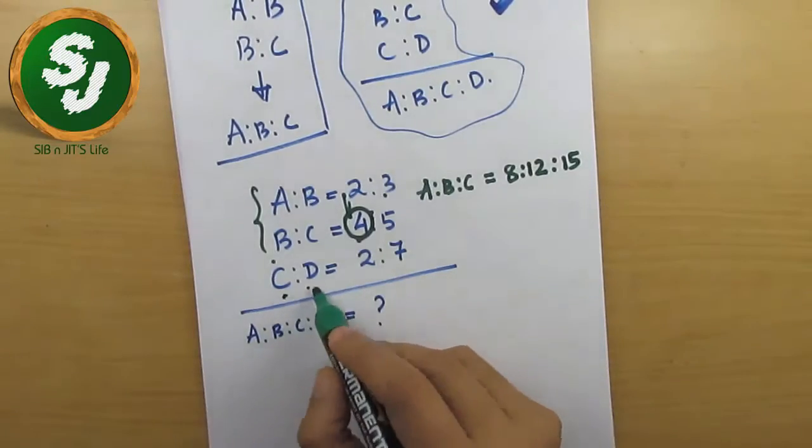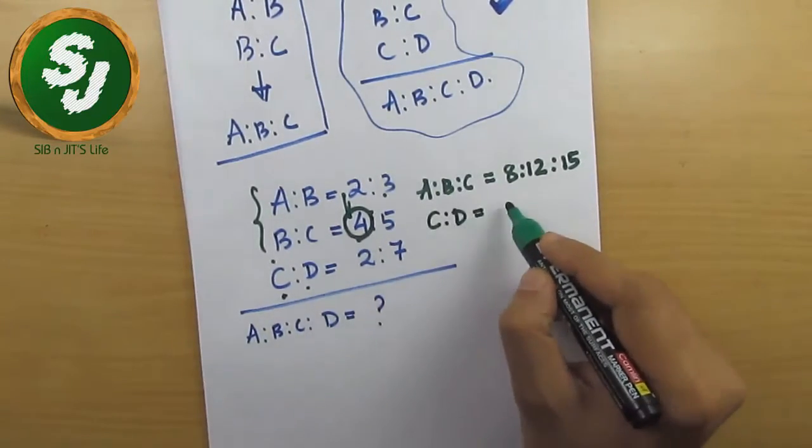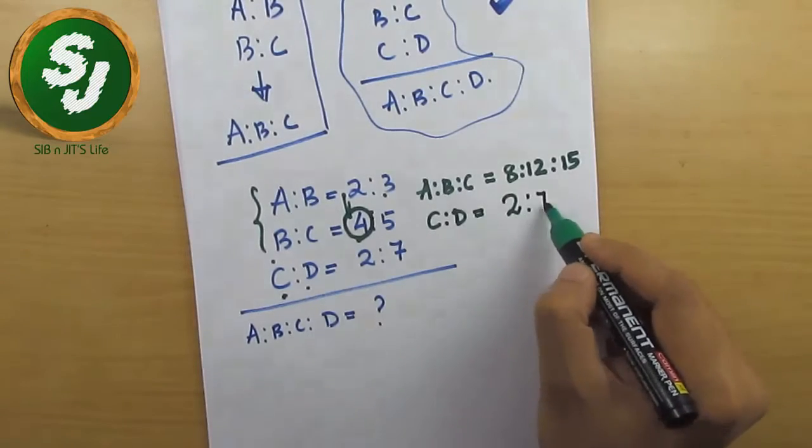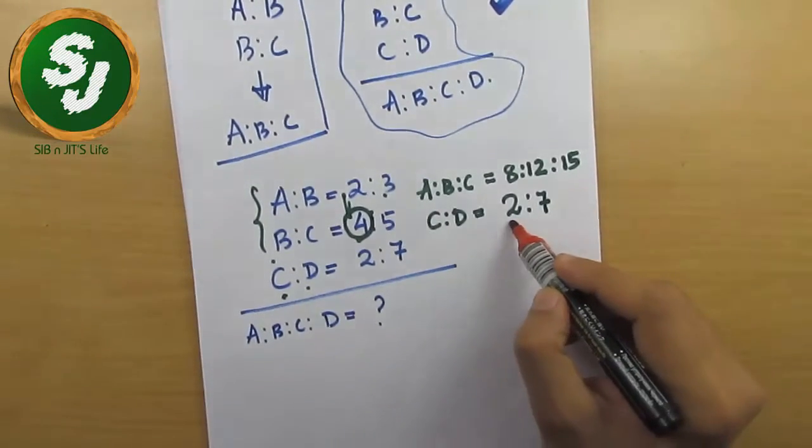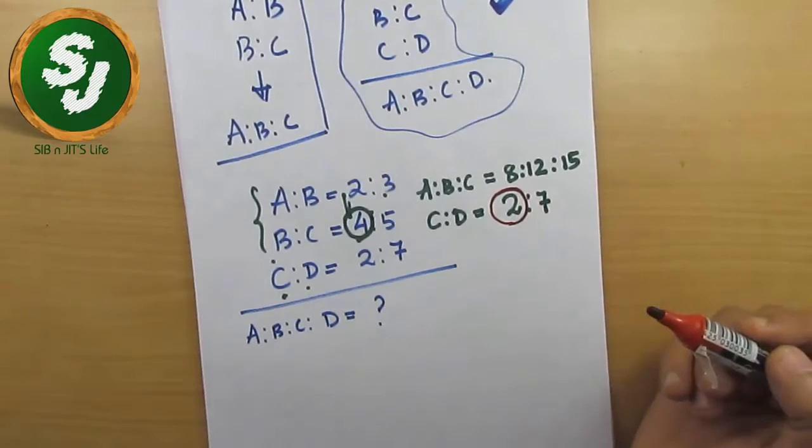Now copy this step, C is to D, just copy paste. So C is to D is 2 is to 7. Now what will you do to find the value of A to B to C to D? You will pick this element 2 and multiply this number individually with every element 8, 12, and 15.